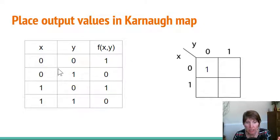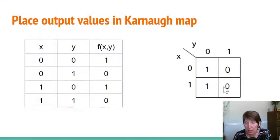The next one is where X is zero and Y is one. So that's this box, right? Because that's where X is zero and Y is one. And the output is zero. So we put the output right there. The next one is where X is one and Y is zero. So that's this box and the output there is a one. And the last one is where X is one and Y is one. And the output is zero. We put the output there.